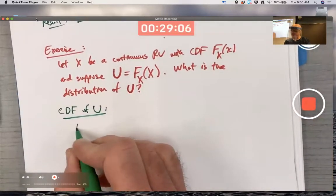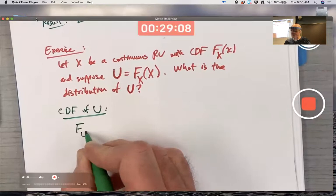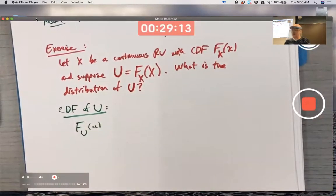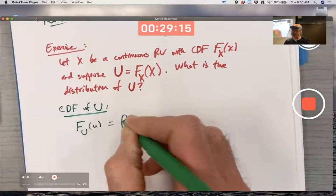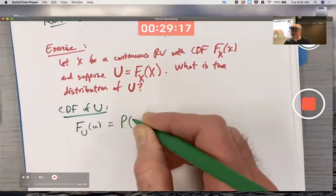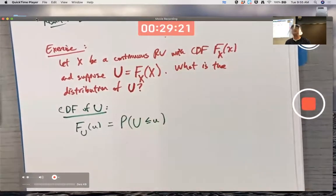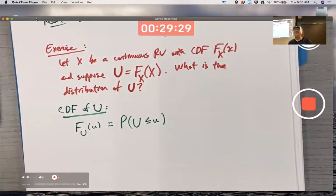The CDF of capital U, capital F sub U of little u, by definition is the probability that the random variable is less than or equal to the given number. This is essential to realize this week - we're going to use this idea a number of times.